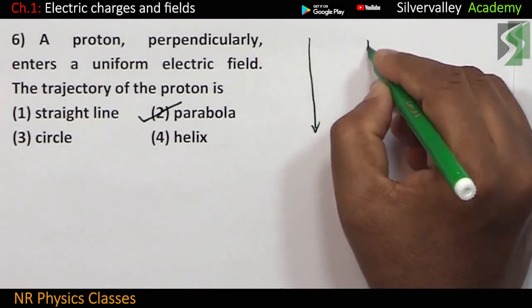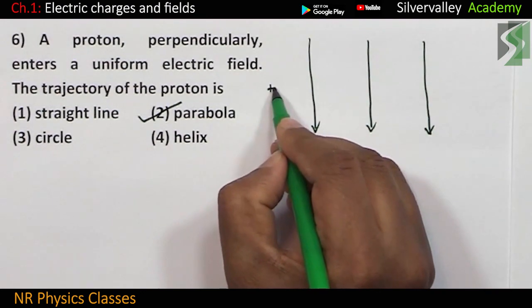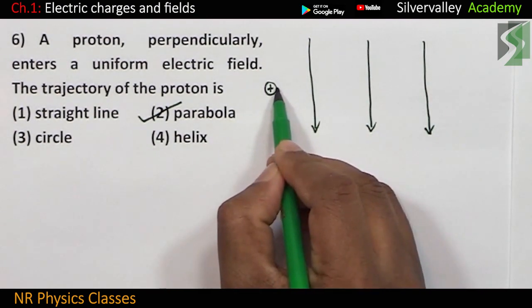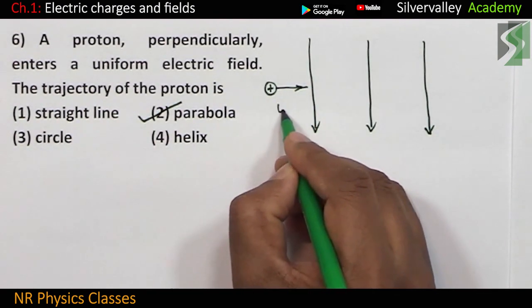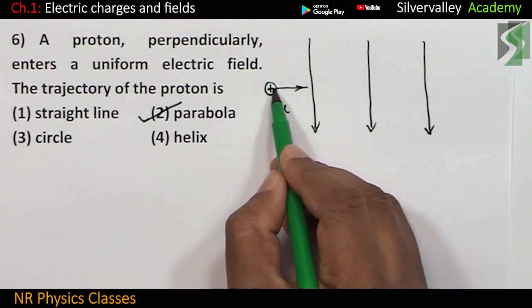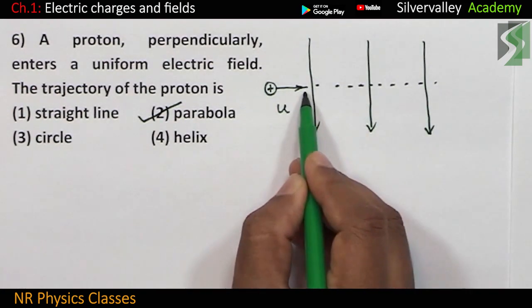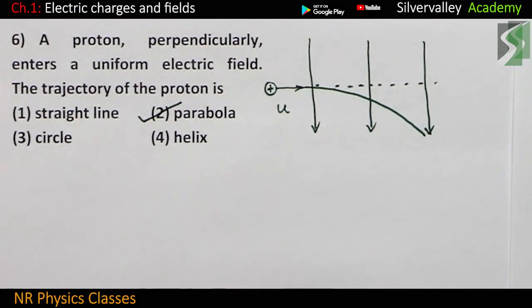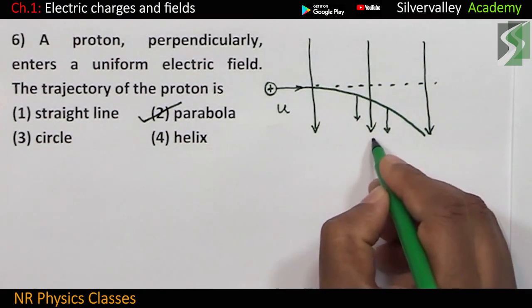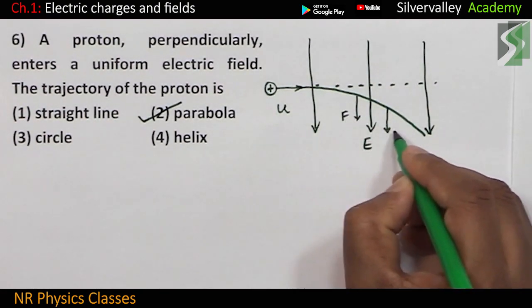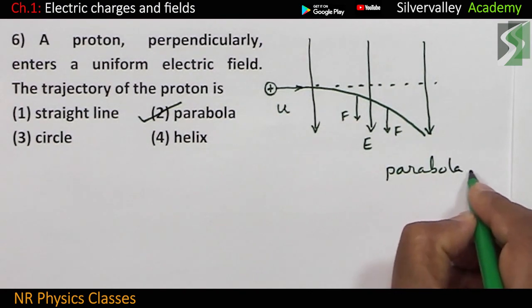Observe. If this is the electric field and a proton which is positively charged enters this electric field perpendicularly with velocity say u, then this proton experiences force in this electric field. As a result, it gets deflected like this because every time the direction of force will be in the direction of the electric field. So, this is electric field and this is force. This is force and path is a, path is a straight line.